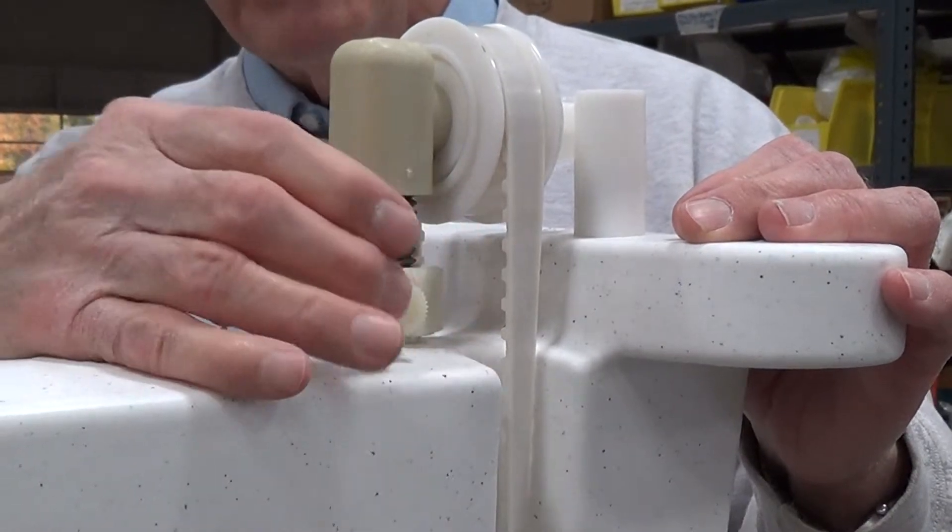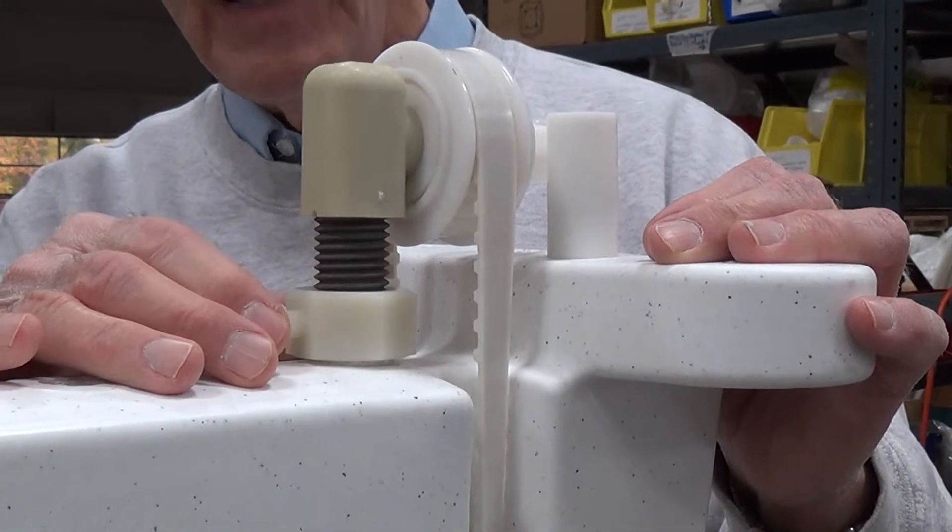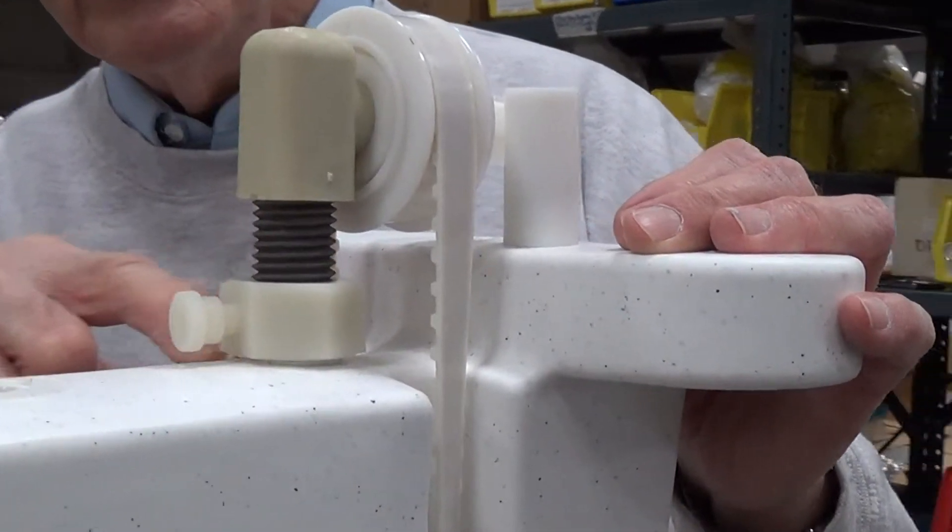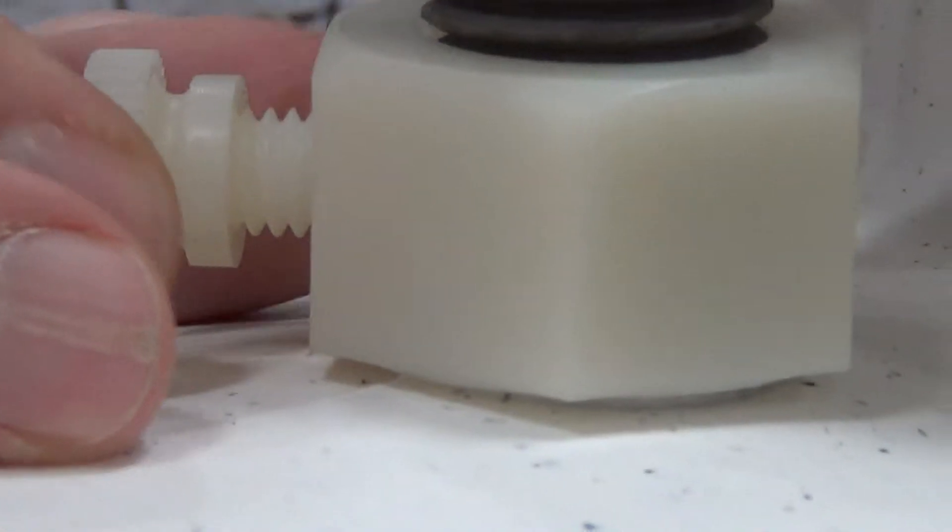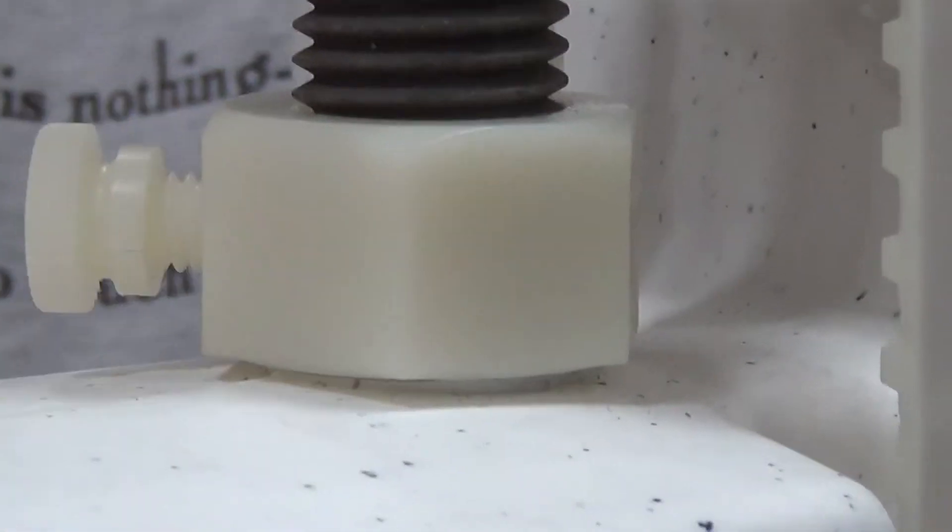The proper tension in the belt is just to bring the nut up to the base of the drive unit here, and then turn it just a little bit, maybe an eighth of a turn past that. Then tighten the thumb screw, and that's all you have to do.